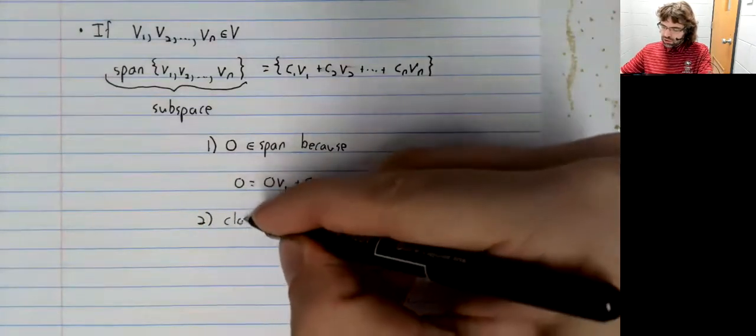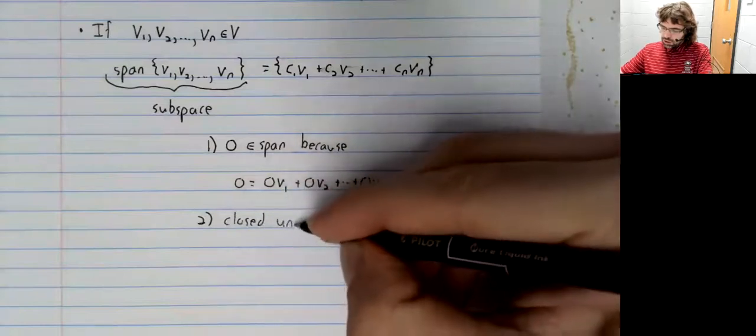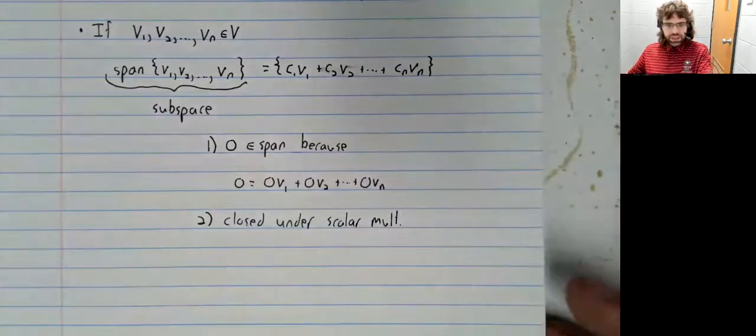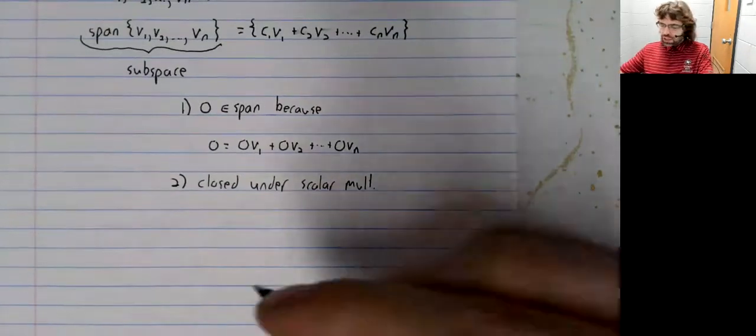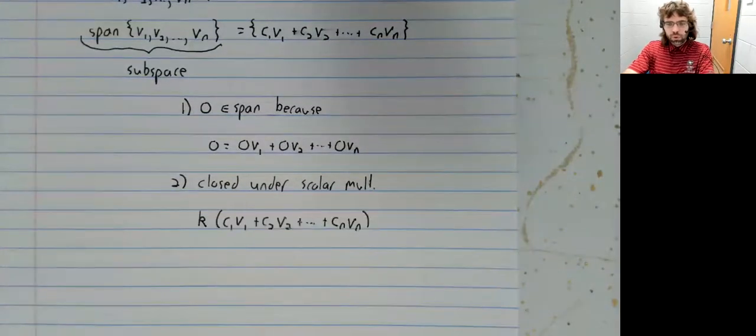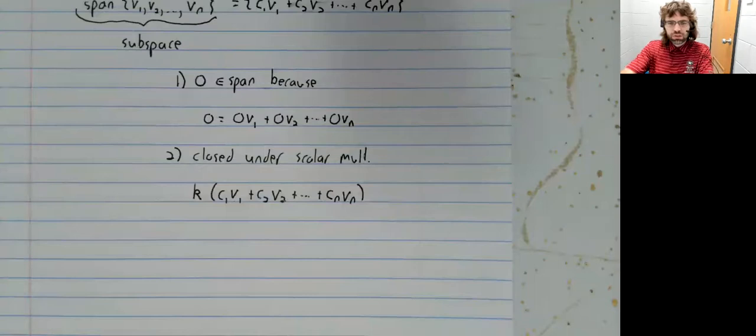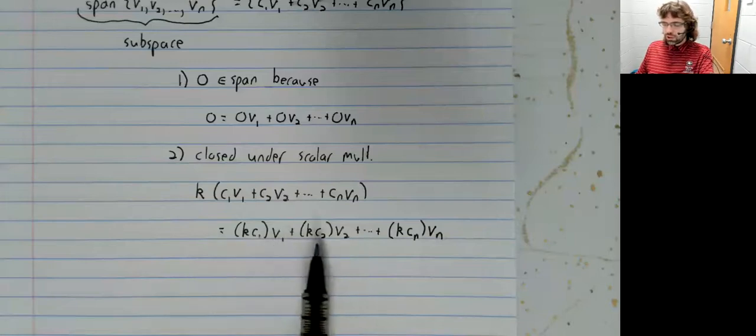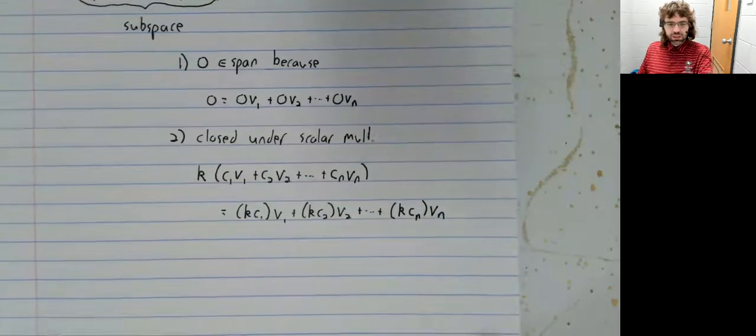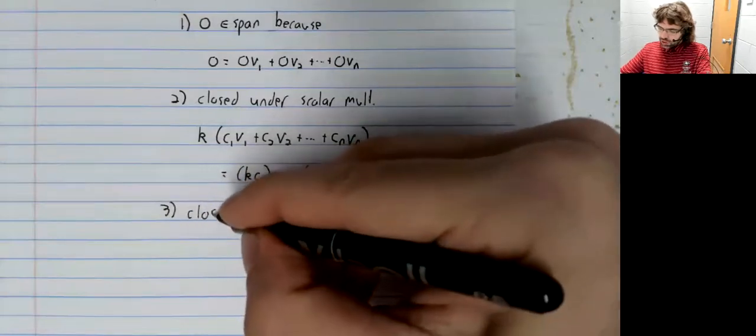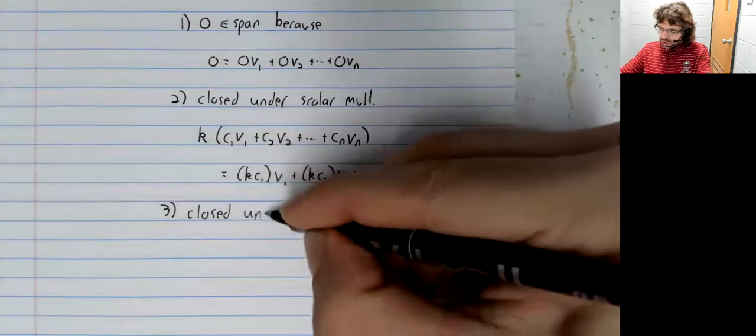The span is closed under scalar multiplication. Because if you take any scalar and multiply it by a linear combination of these vectors, the result is still a linear combination of these vectors. And it's closed under addition.